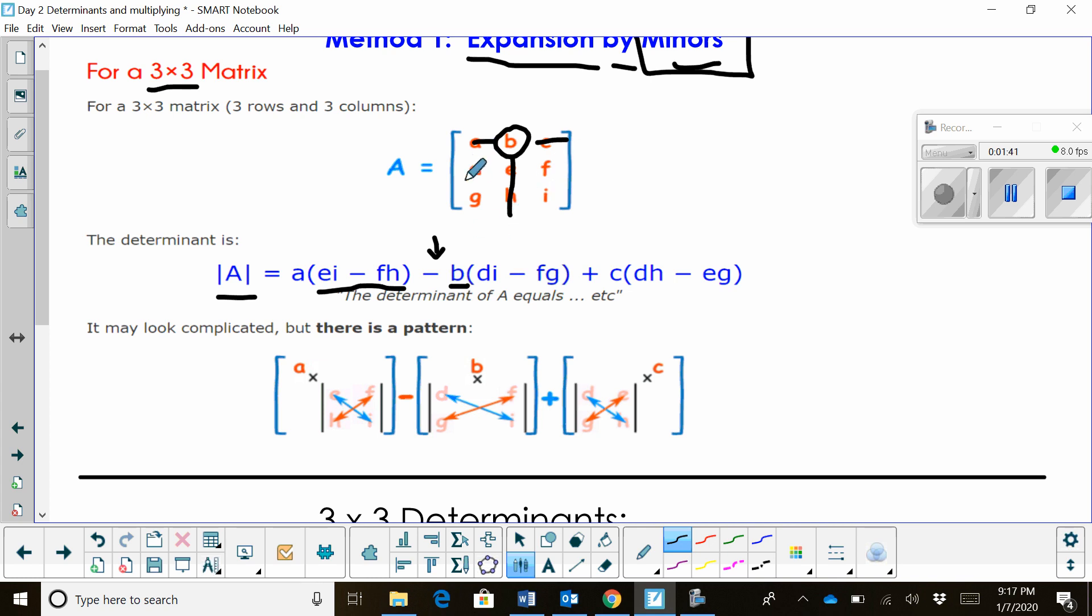And what we're left with is D, F, G, I. That creates another 2 by 2 determinant or 2 by 2 matrix. We then find the determinant. So I take D times I minus F times G. And that's where the second part of the formula comes from.